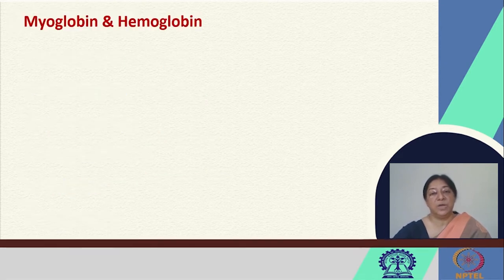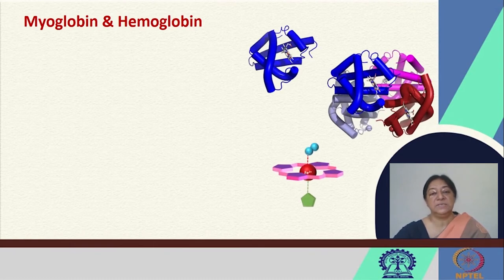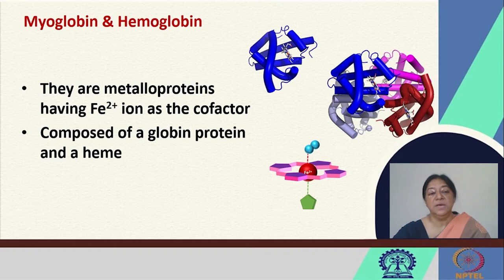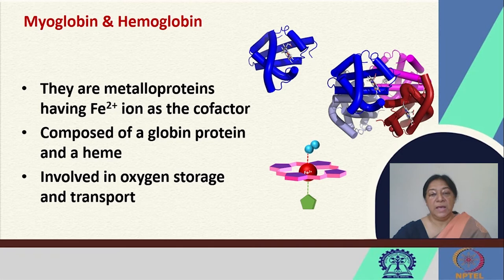When we look at the structures of myoglobin and hemoglobin and their functionalities, we see that they are two very similar proteins in that they have globin domains. They are metalloproteins belonging to this module, this being a specific example with the ferrous ion, the Fe2+ ion, as the cofactor. They are composed of a globin protein and a heme and are involved very importantly in oxygen storage and oxygen transport.